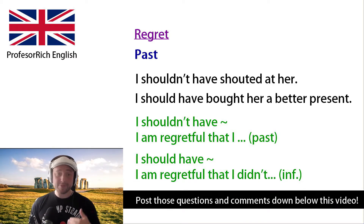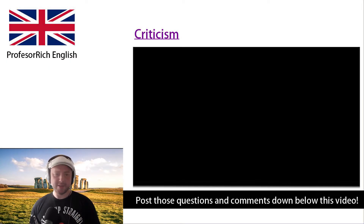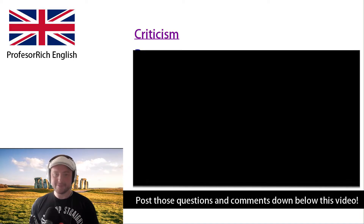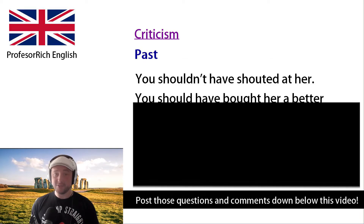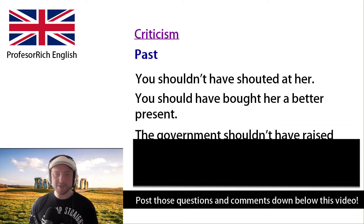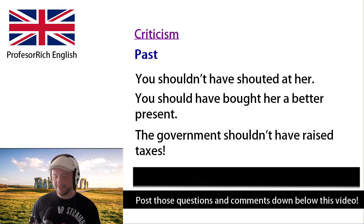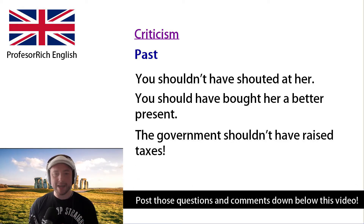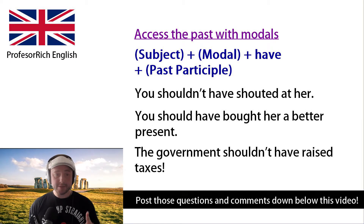We also have criticism of someone else: 'You shouldn't have shouted at her.' 'You should have bought her a better present.' 'The government shouldn't have raised taxes.' These are all in the past — past regret and past criticism. The form is: should + have + past participle. A common way with modal verbs to access the past is to use 'have' and then the past participle.